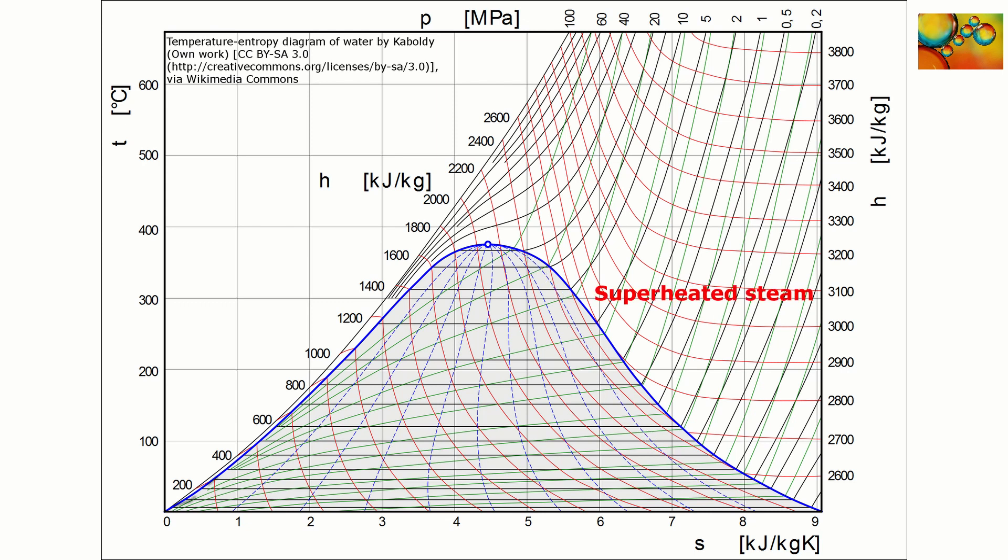To the right of the saturated vapor line, we have the superheated steam region. To the left of the saturated liquid line, we have the compressed or subcooled liquid region. But bear in mind, if you move too much to the left, you may end up in the solid region, which is not shown in detail in this diagram.